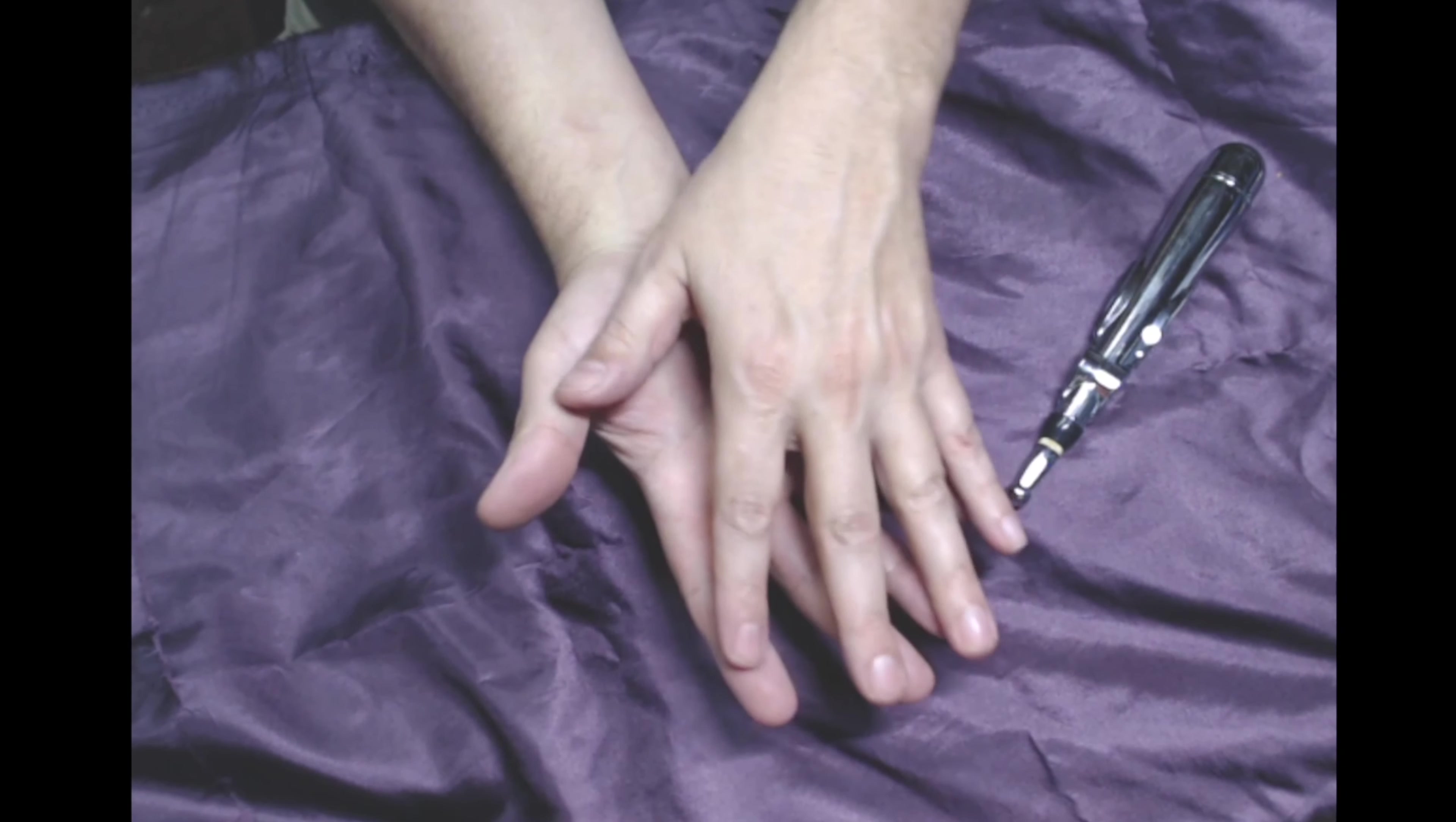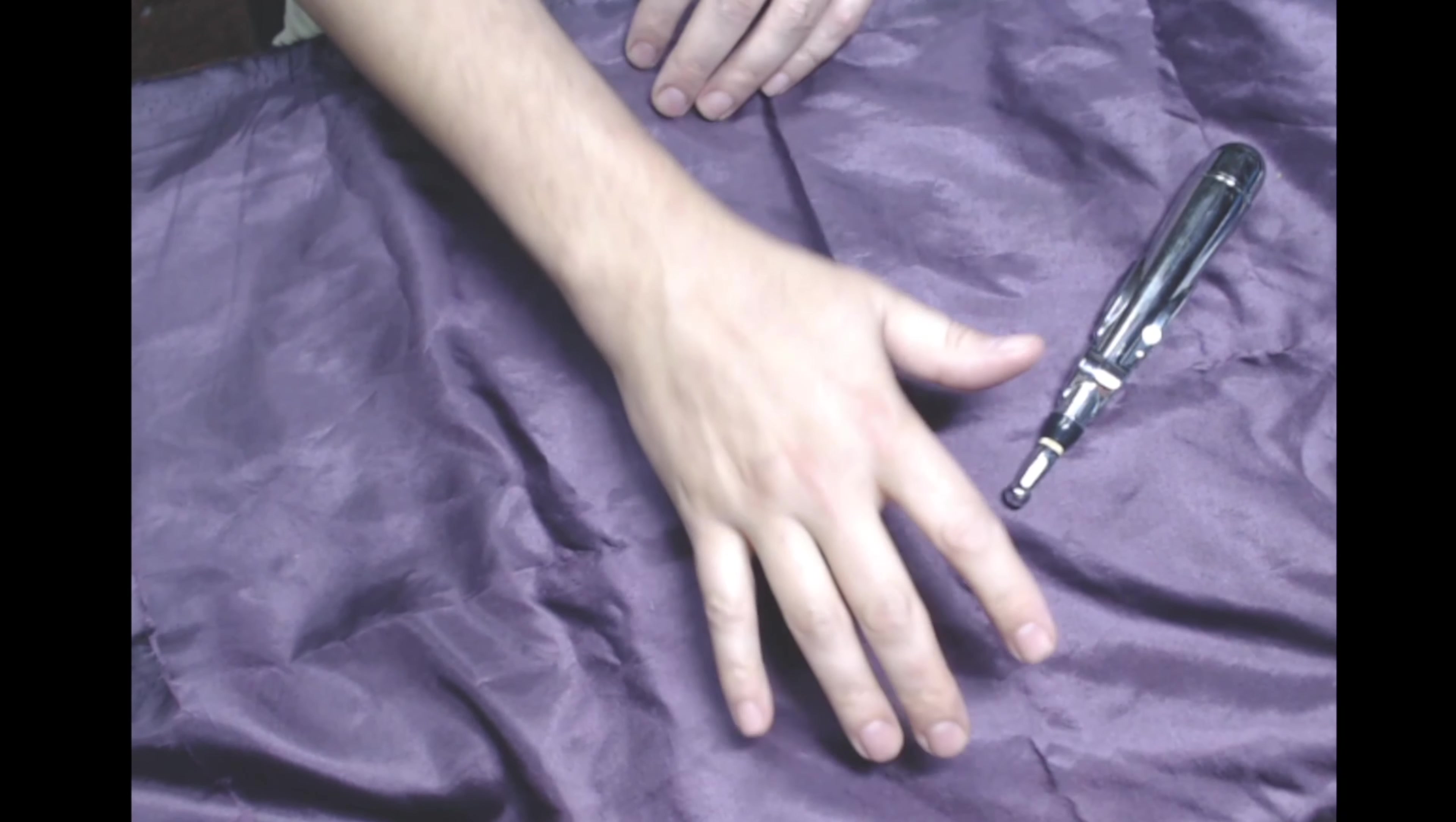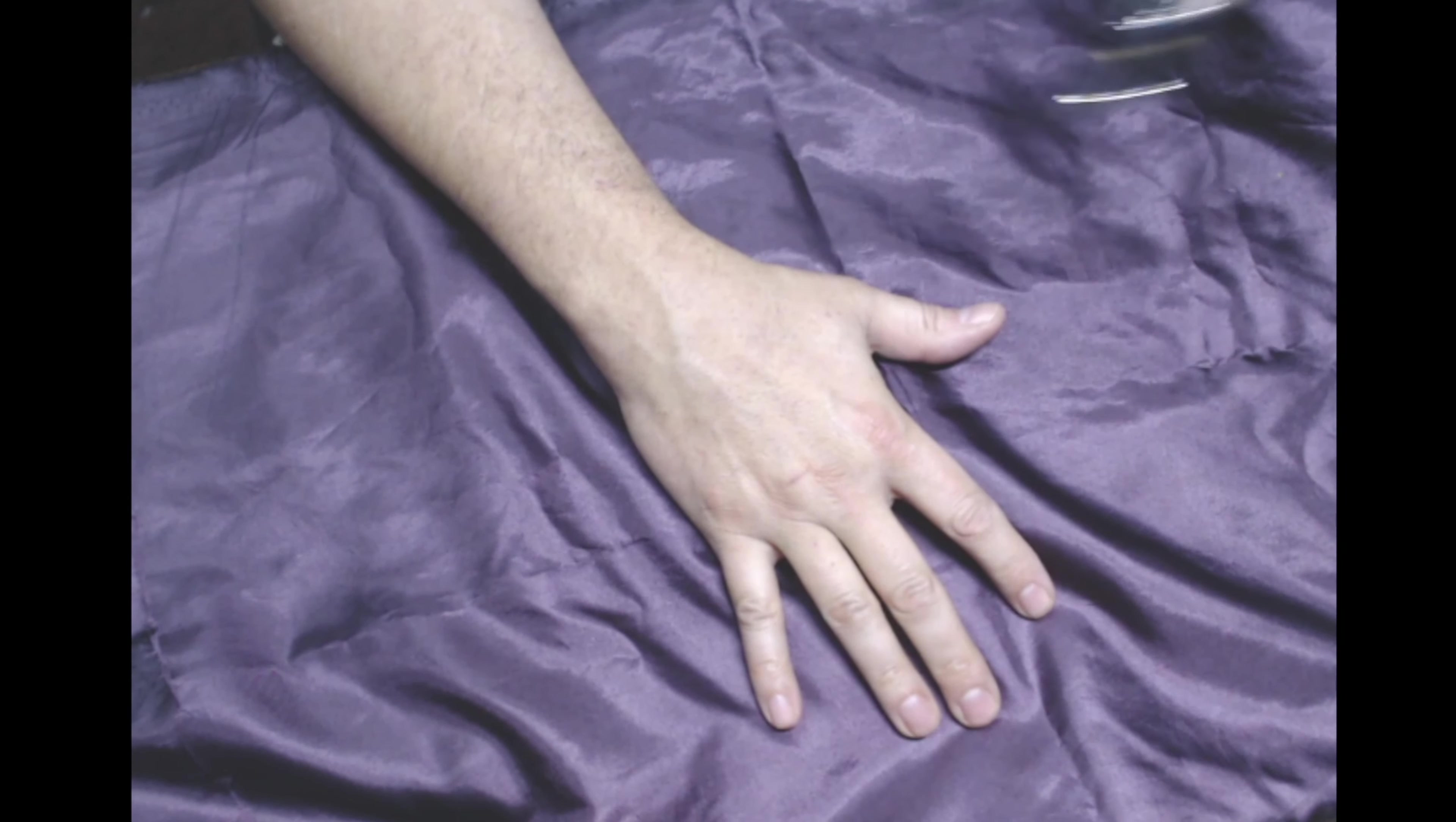So we're getting the whole palmer or volar surface of the hand and we're catching all of these interosseous muscles. And that actually does feel a little better.